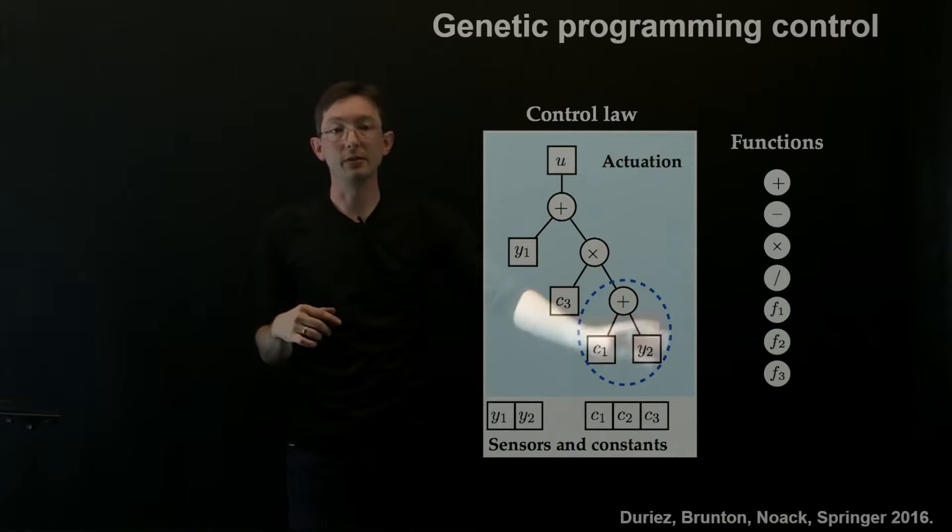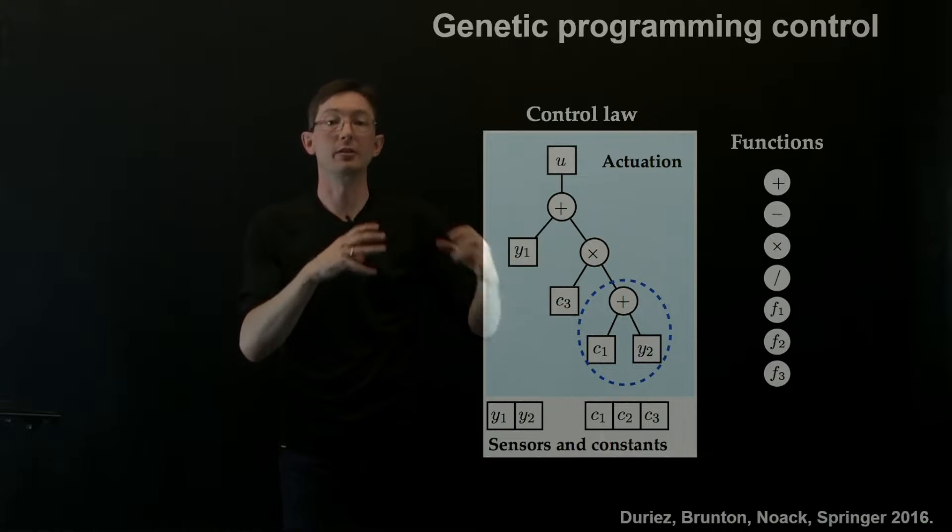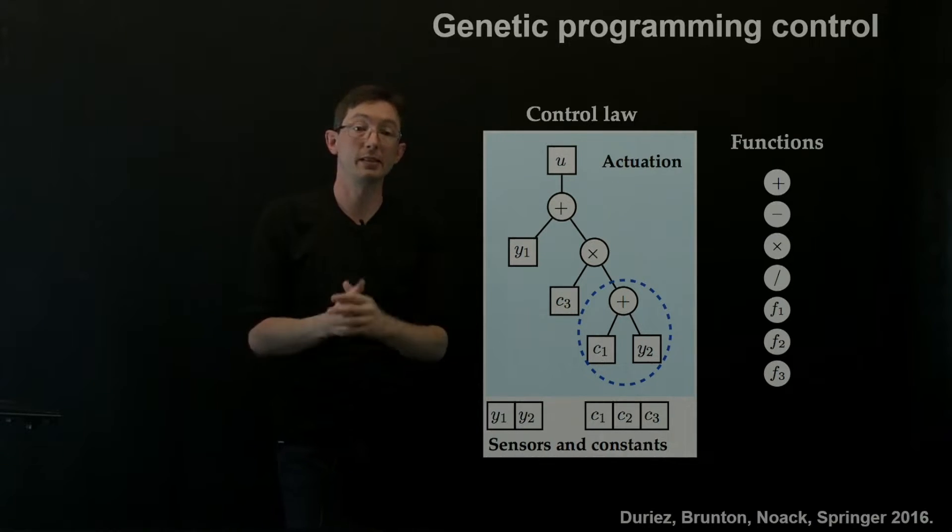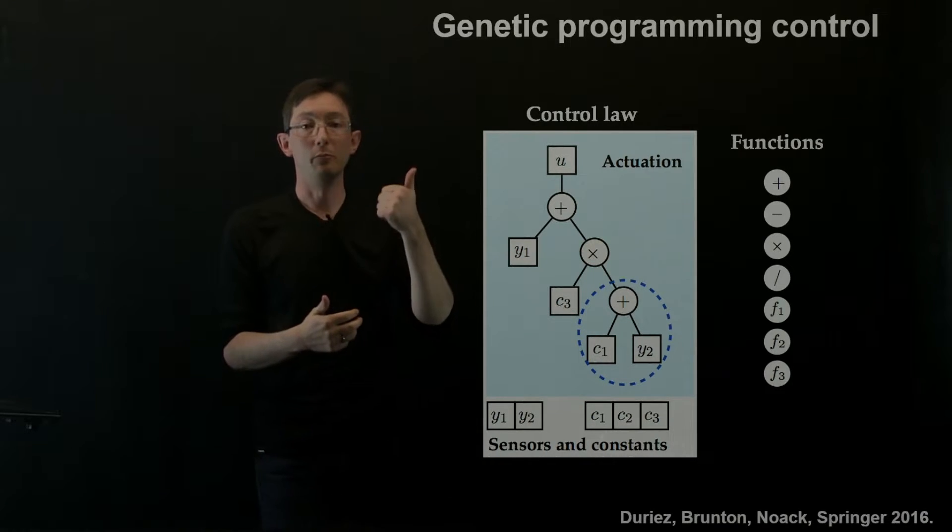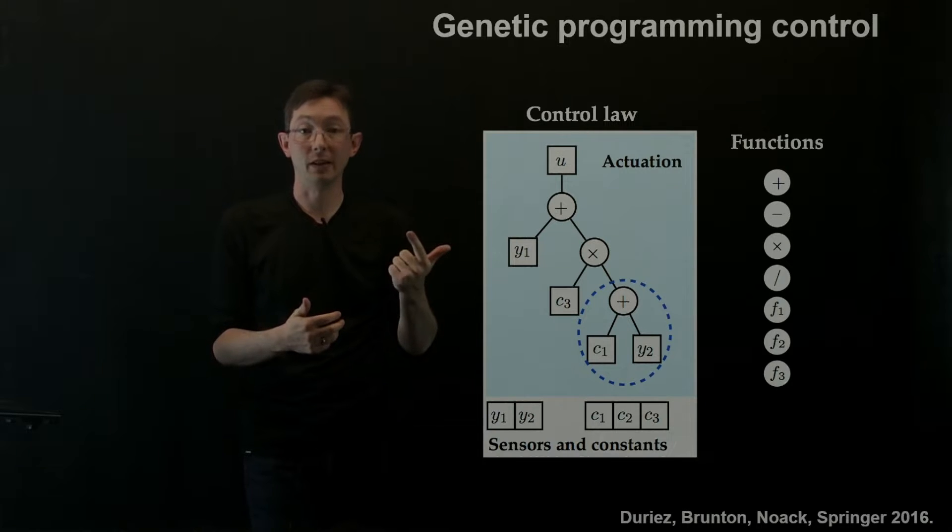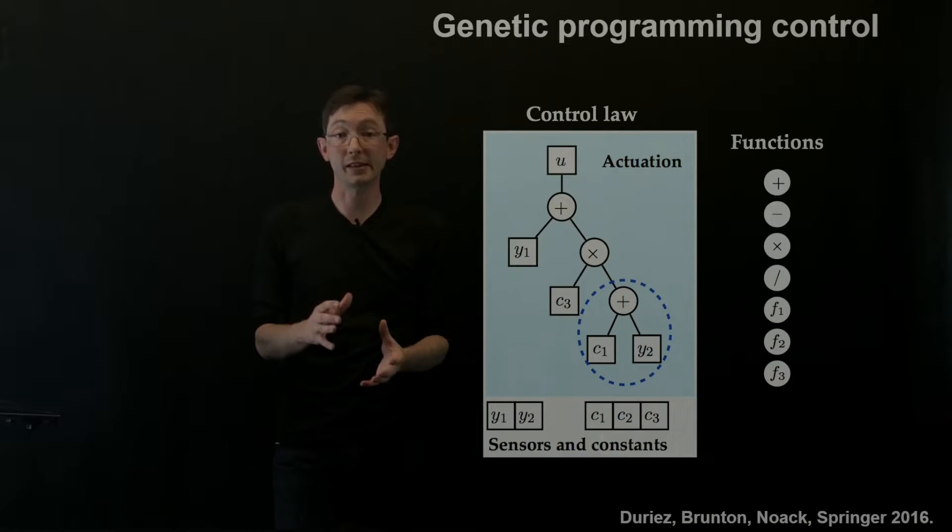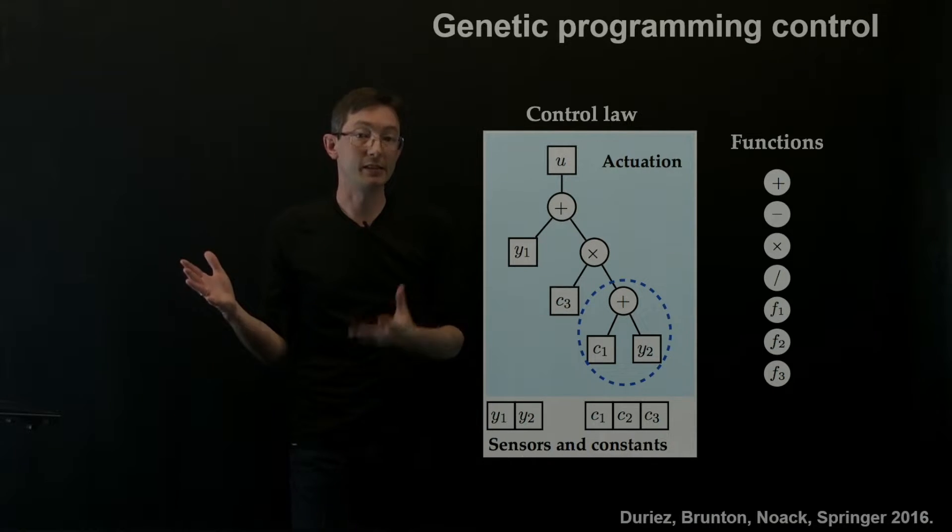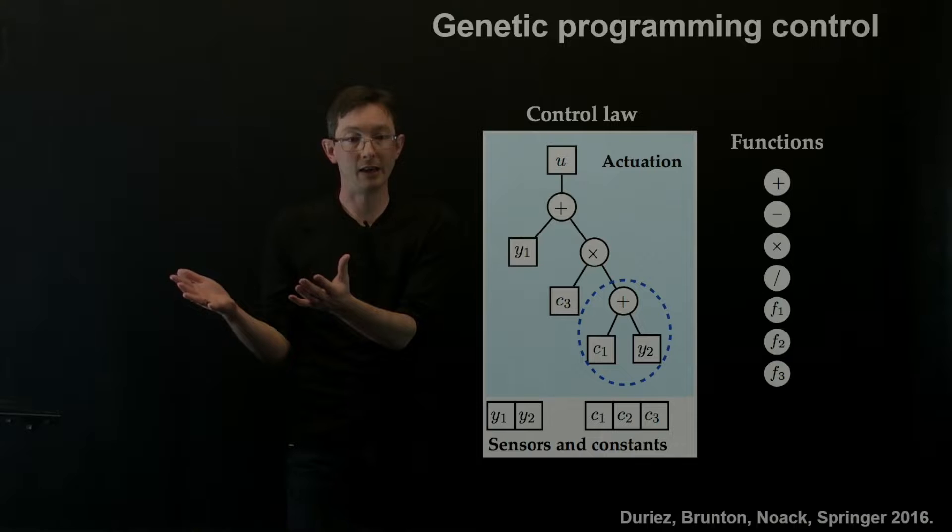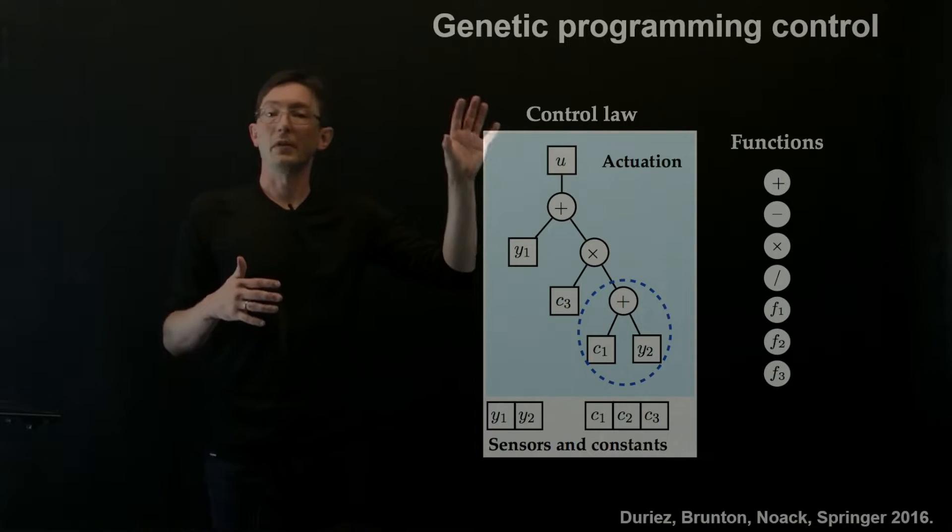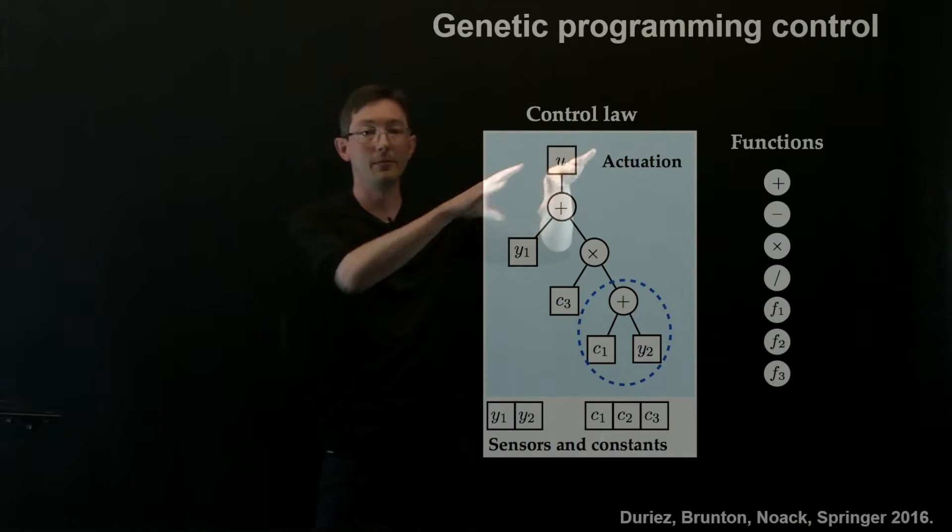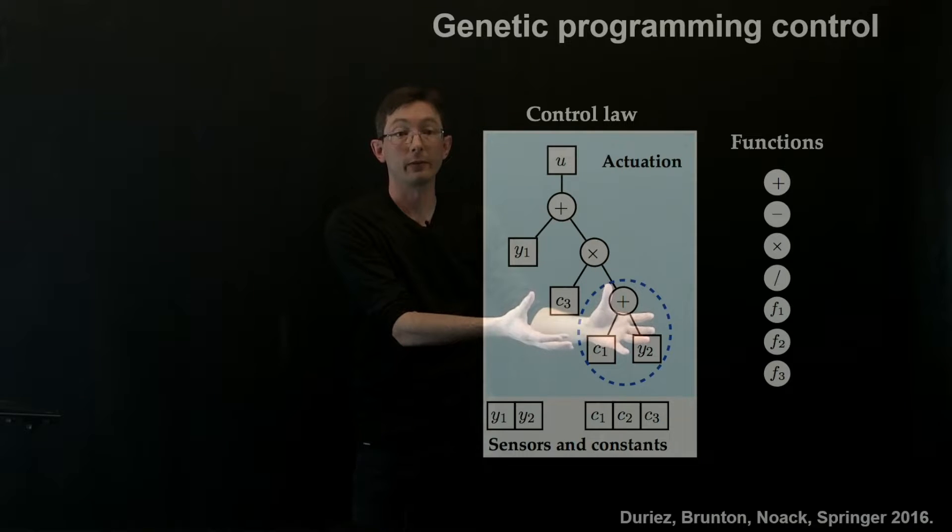To get the x dot equals f of x, people have used these genetic programming structures to identify dynamical systems models. So Bongard and Lipson and Schmidt and Lipson have done genetic programming to identify governing laws of physical systems in 2007 and 2009 in PNAS and in science. Great papers. You should definitely read them. That's how they use genetic programming for model identification.